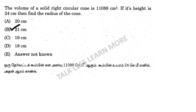In the video, the volume of a solid right circular cone is 11,088 cm cube. If its height is 24 cm, then find the radius of the cone.